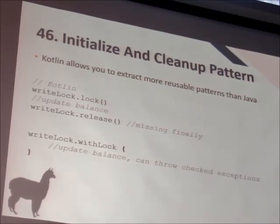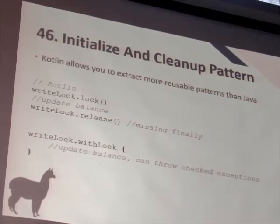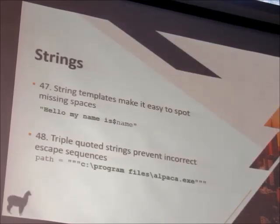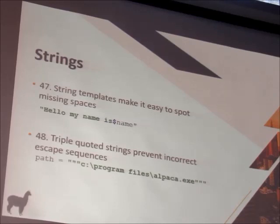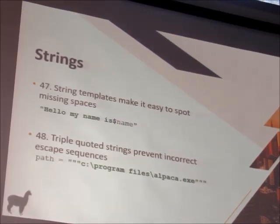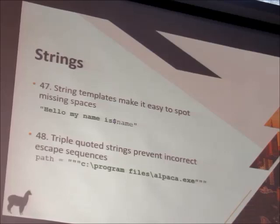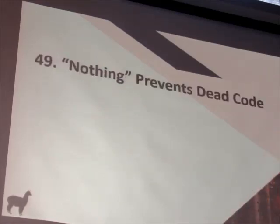In this case, this is actually part of the standard library. Given a lock, you can say withLock and then do some code. It will automatically acquire the lock, run your code, and whether or not there's an exception, it will also release the lock afterwards. Also, Kotlin has string templates which make it really obvious to spot a missing space. Similarly, Kotlin has triple-quoted strings so you don't have to deal with escape characters — a backslash is just a backslash, making file paths very easy to read.